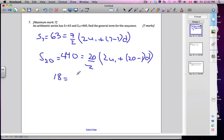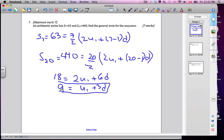So 63 divided by seven halves is 18, so that seven halves is gone. So I have 2u₁ plus 6d. Oh, these are all even, let's divide everything by 2. So I get 9 is equal to u₁ plus 3d. So here is my first equation, all nice and simplified.